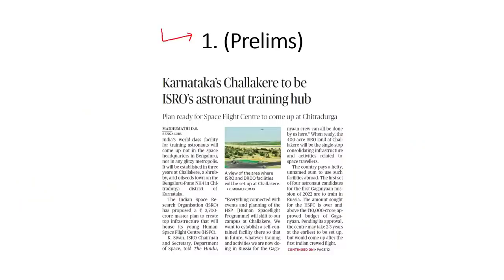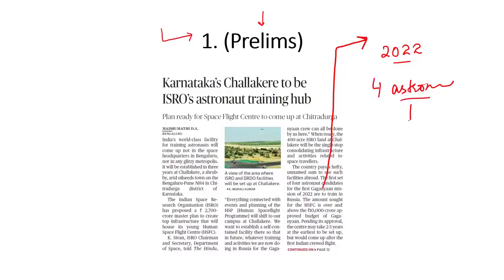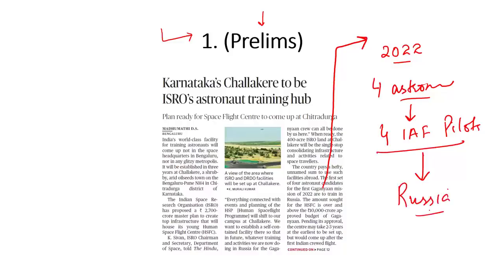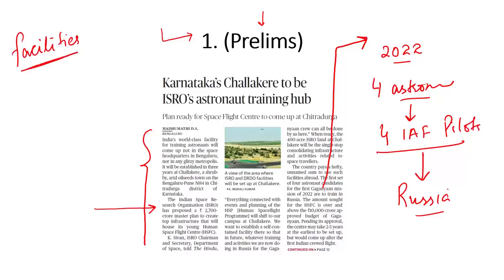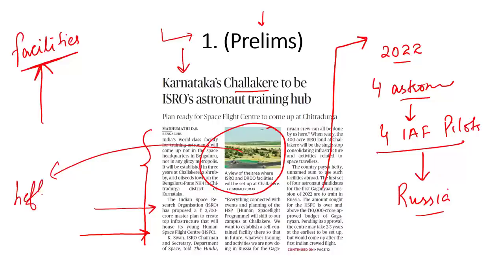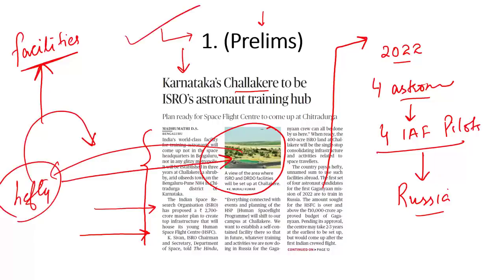Now let's look at another news on page number 1, relevant for prelims. On January 2, we discussed Gaganyaan, which is India's first manned mission to space, scheduled for 2022. Four Indian Air Force pilots have been selected and they will be trained in Russia, because India lacks the facilities. ISRO has proposed a ₹2,700 crore plan to create infrastructure for future crew training in India. This world-class centre, to be named the Human Space Flight Centre, will be set up at Chalakere in Karnataka. Once this facility is set up, India won't have to pay hefty amounts to other countries for using their facilities.